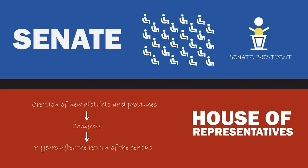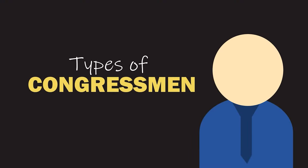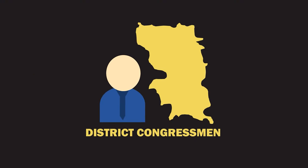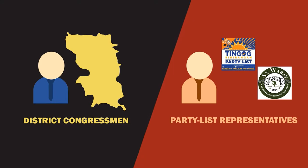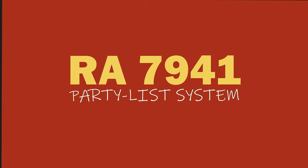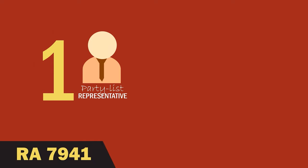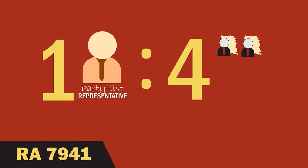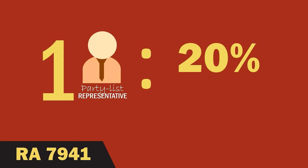There are two types of congressmen: district representatives and party-list representatives. District representatives represent a particular congressional district, while party-list representatives represent the minority sectors of the population. Republic Act No. 7941, the Party-List System Act, mandates one party-list representative for every four legislative district representatives, or 20 percent of the total number of House members.